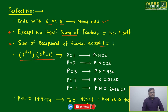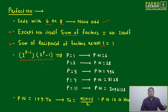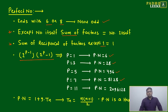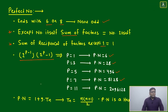A perfect number can also be expressed based on a specific formula — questions have already been asked about this in CAT, but students don't recognize it as related to perfect numbers. Once you know, you can build a very concrete understanding of how the number pattern behaves. The expression is: 2 to the power (p minus 1) multiplied by (2 to the power p minus 1), where p is a prime number. Starting with p equal to 1 and taking odd numbers: the first perfect number is 6, second is 28, third is 496, and fourth is 8128.